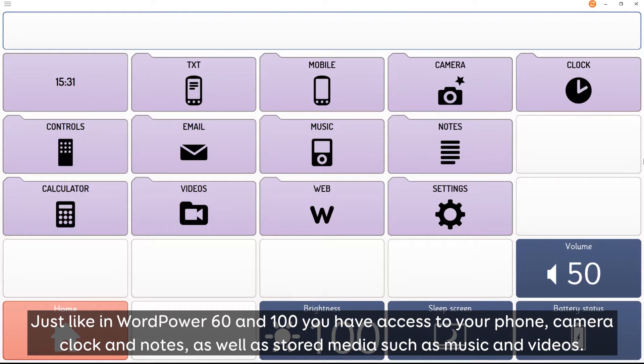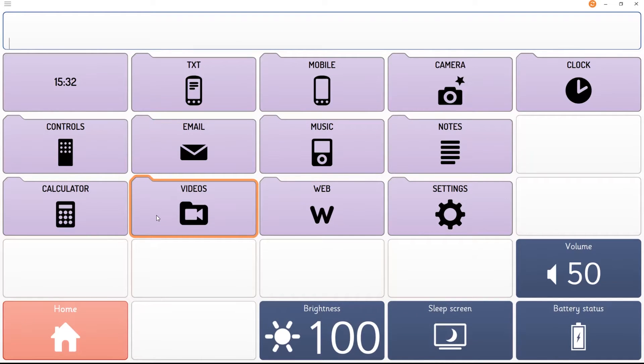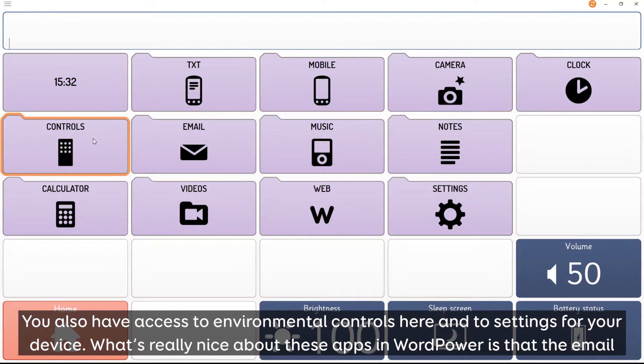Just like in word power 60 and 100 you have access to your phone camera clock and notes as well as stored media such as music and videos. You also have access to environmental controls here and to settings for your device.